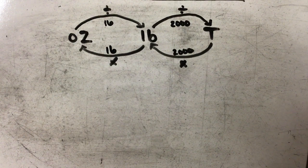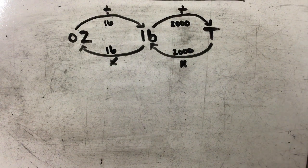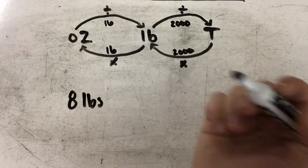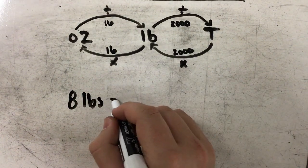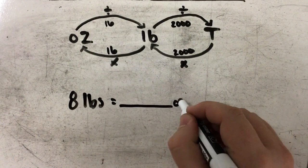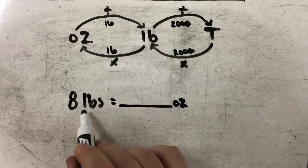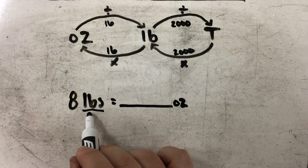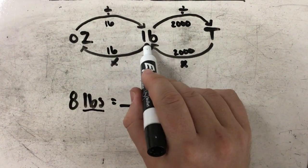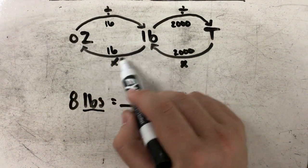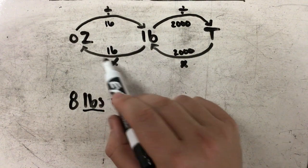So let's try a few problems together. Let's start with 8 pounds, and I want to know how many ounces that will be. So again, I'm going to start with whatever has been given to me. In this case, they gave me pounds, and I want to get to ounces. So I'm going this way, and if I look at my arrow going that way, I see that it wants me to multiply by 16.